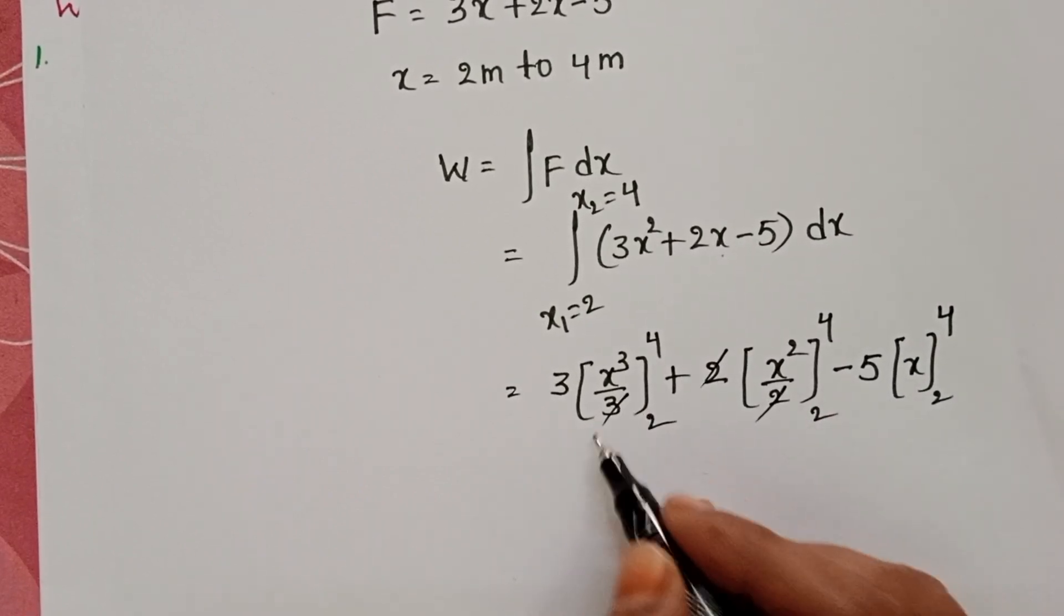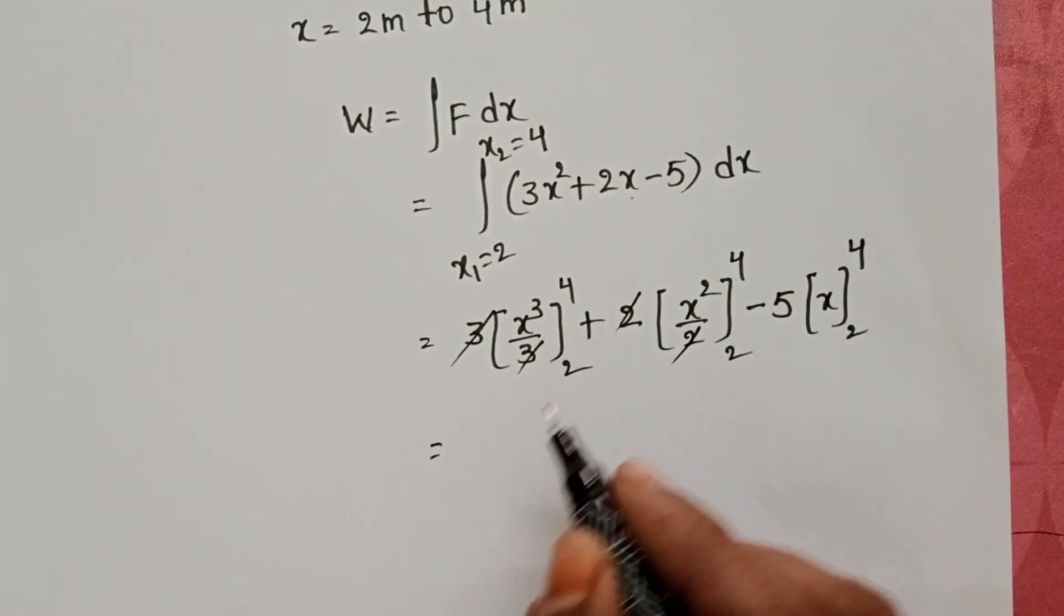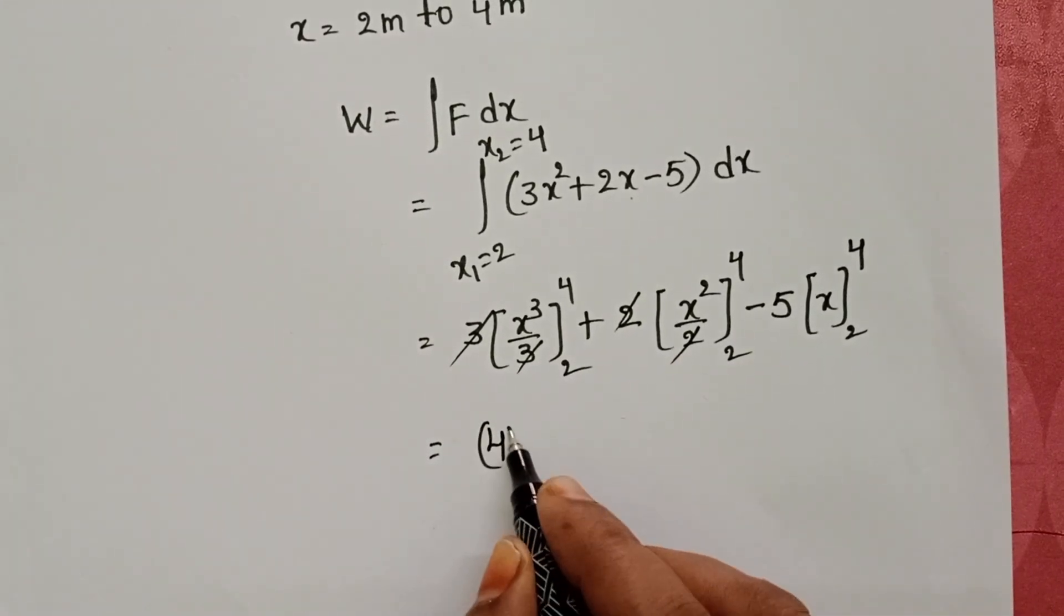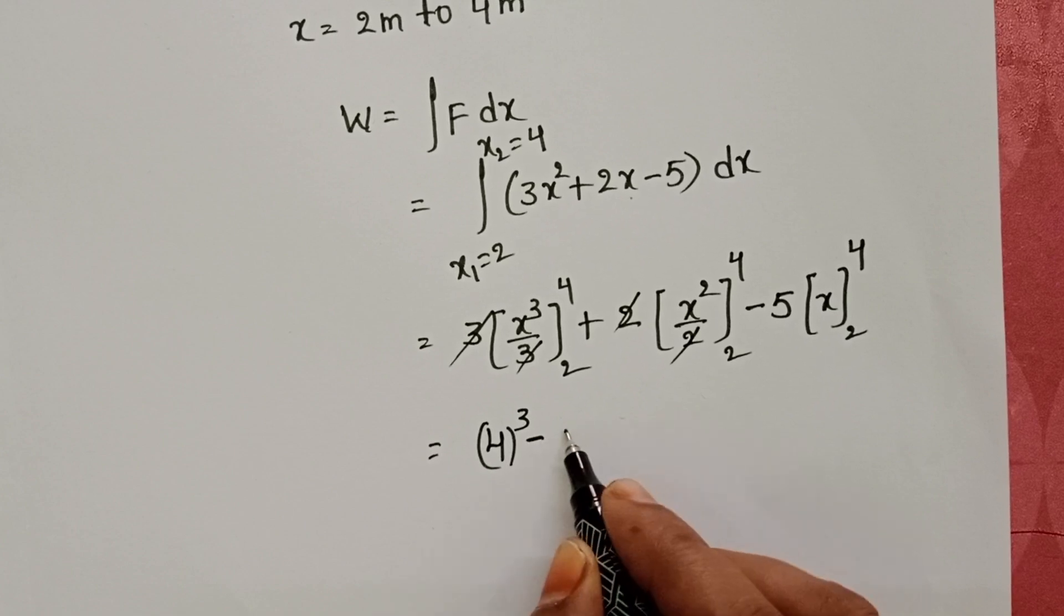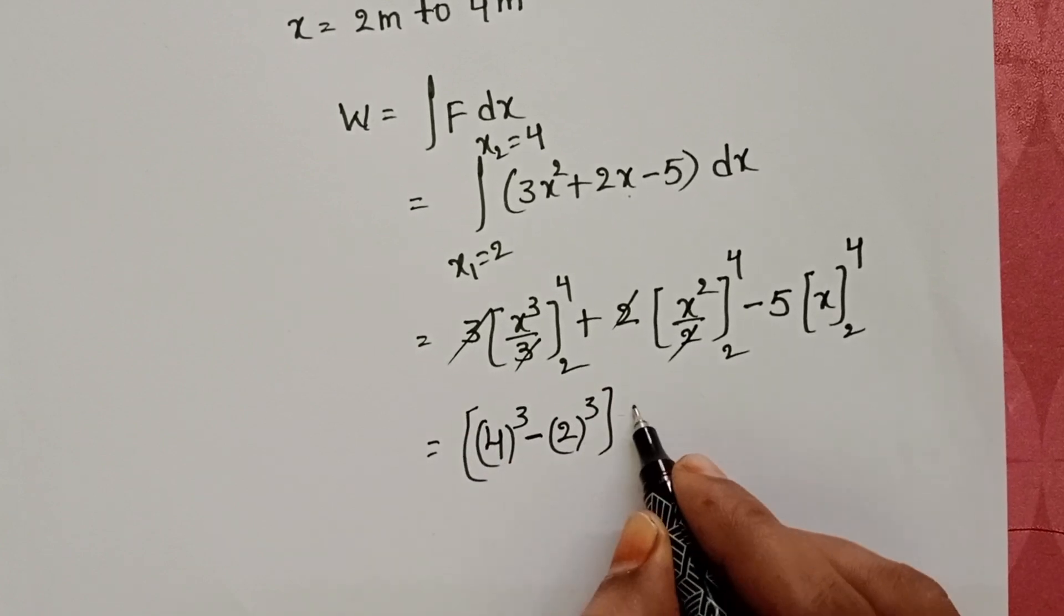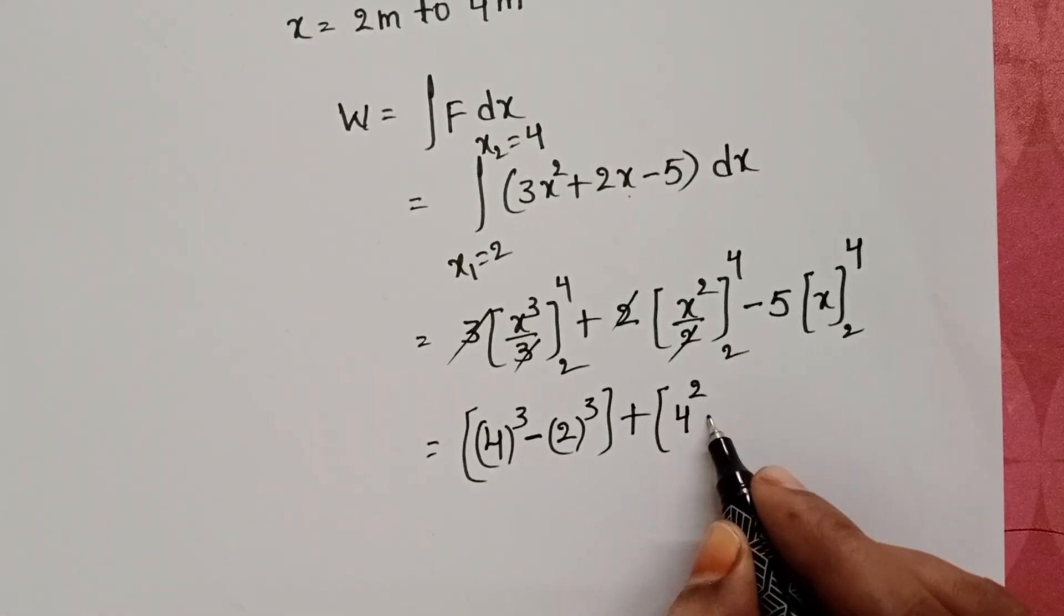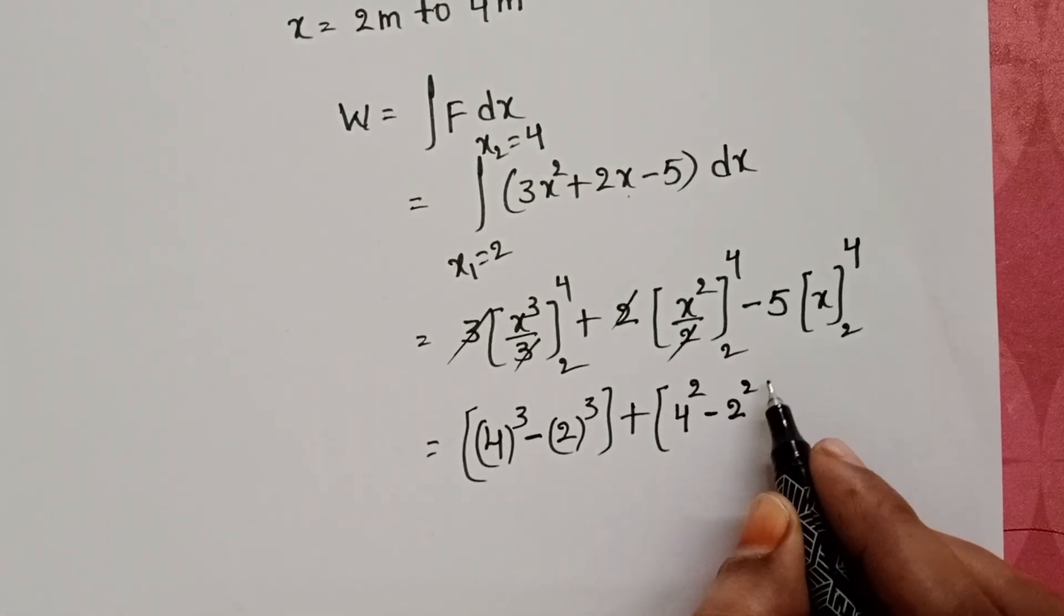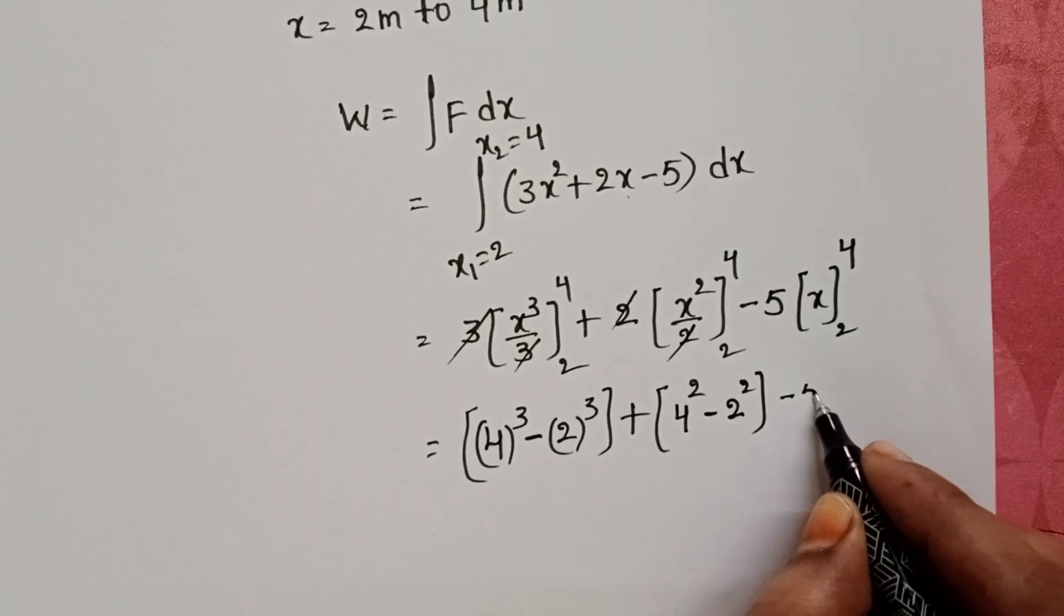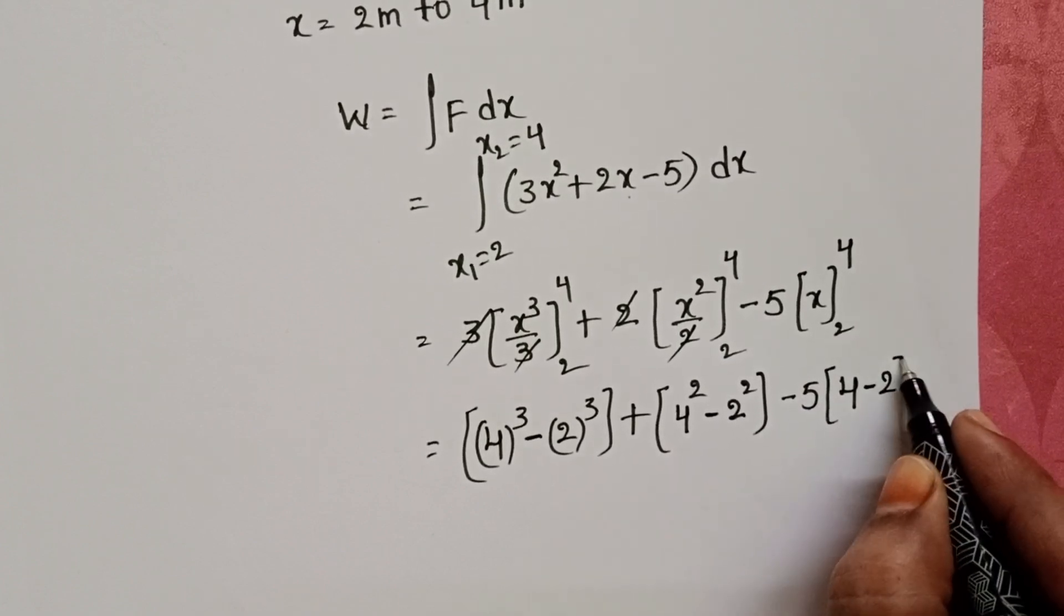Here 2 gets cancelled, 3 to 3 also gets cancelled. First substitute the upper limit. 4³ minus 2³ plus in place of x upper limit 4, 4² minus 2² minus 5 into upper limit 4 minus lower limit is 2.